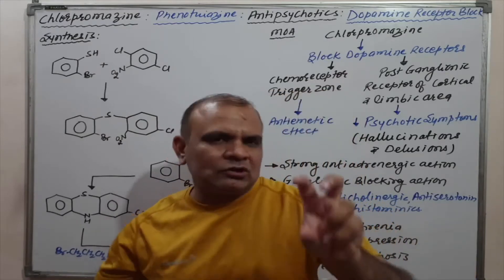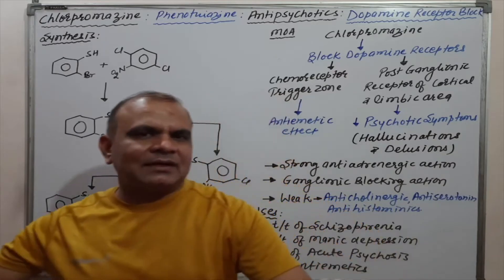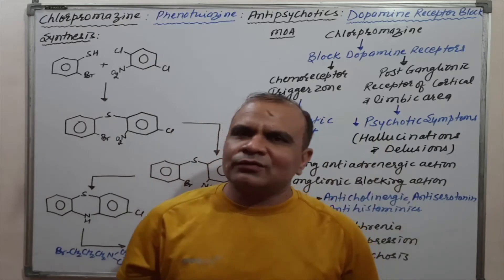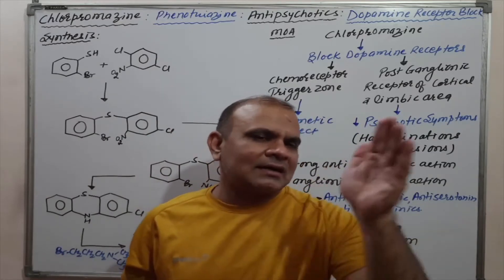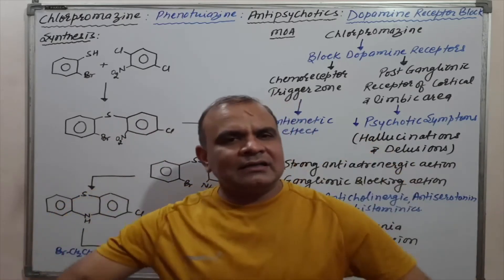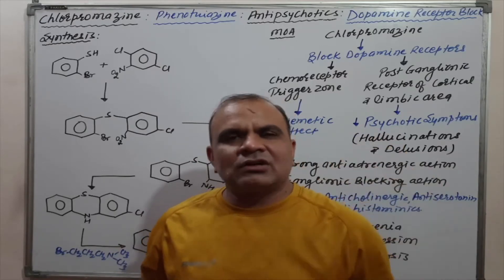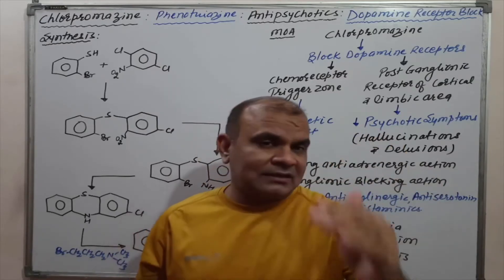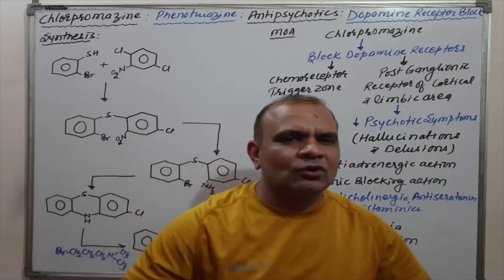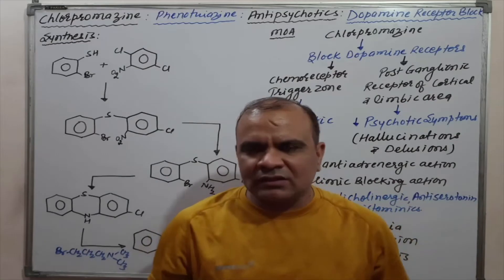Chlorpromazine basically belongs to the Phenothiazine ring. In multiple choice questions as well as GPAT, Pharmacist, Drug Inspector, and DCU exams, questions are asked about the use of Phenothiazine and which category it belongs to. In university exams there are questions like: write a short note on Chlorpromazine, what are its uses, and write the synthesis of Chlorpromazine. All these questions will be answered in this lecture.